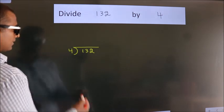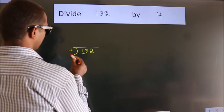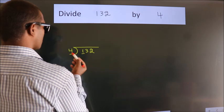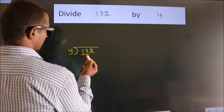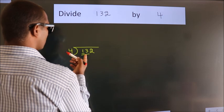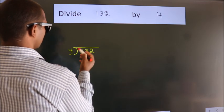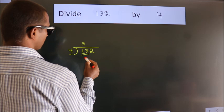Next, here we have 1, here 4. 1 is smaller than 4, so we should take 2 numbers: 13. A number close to 13 in the 4 table is 4 times 3 equals 12.